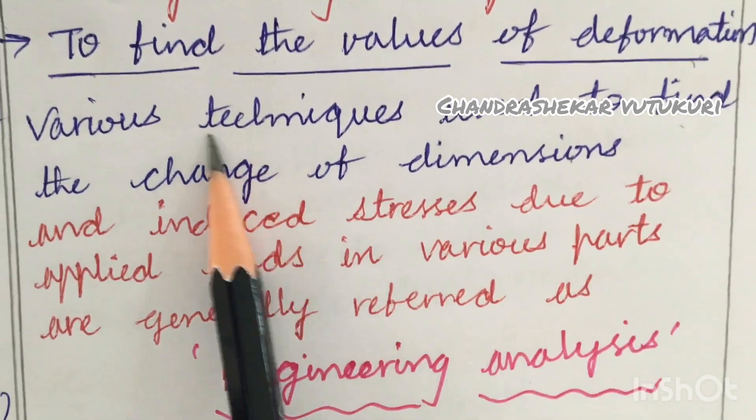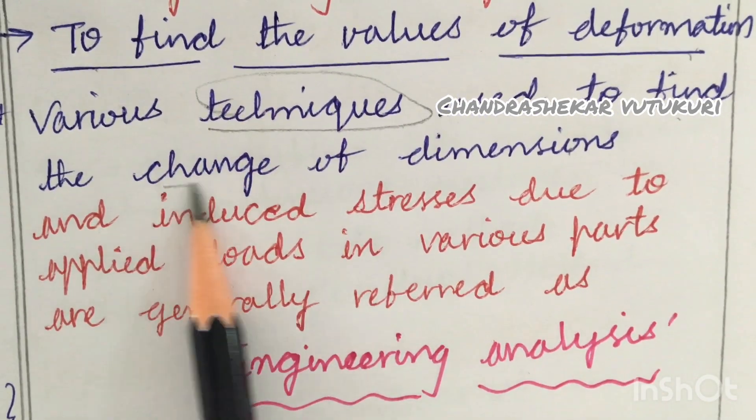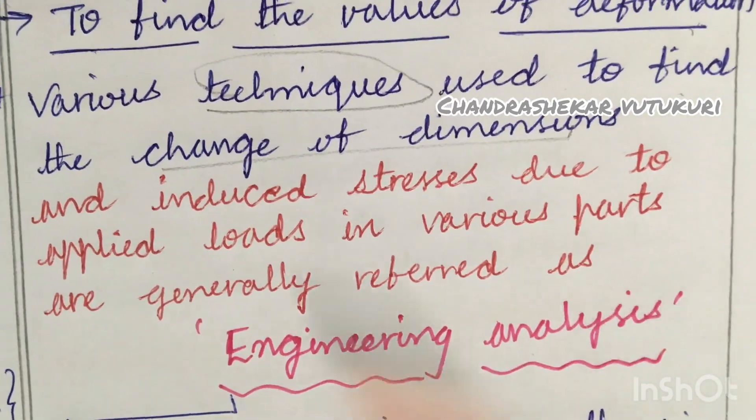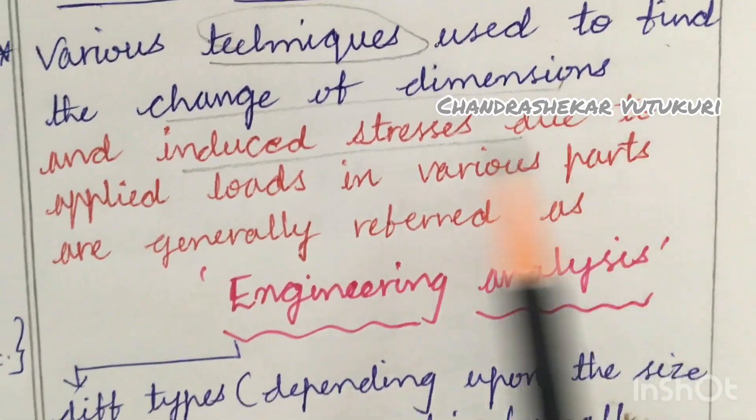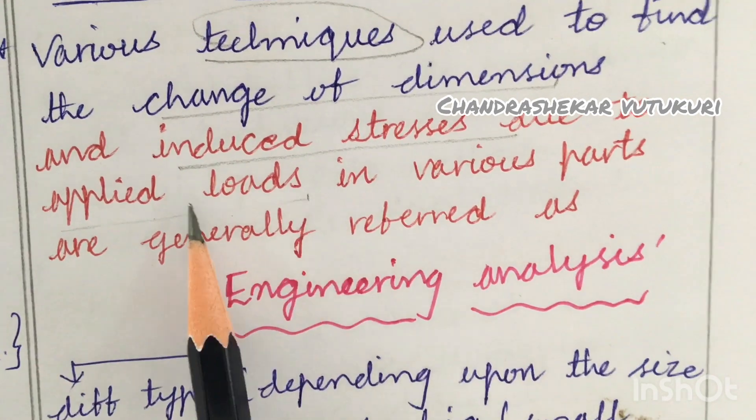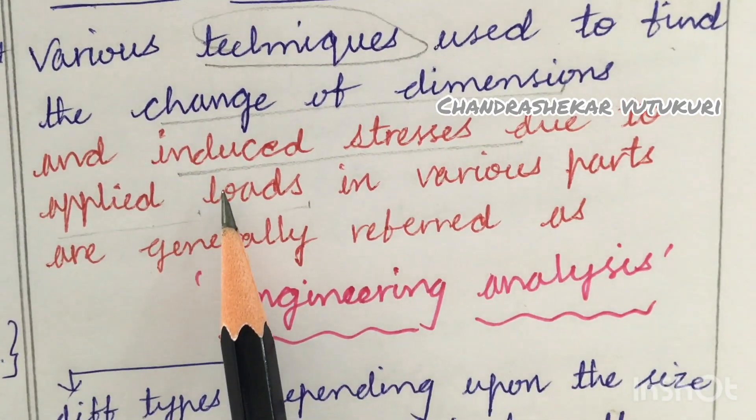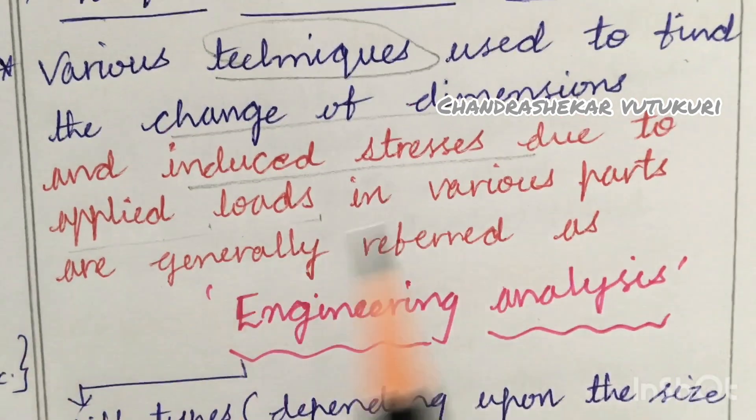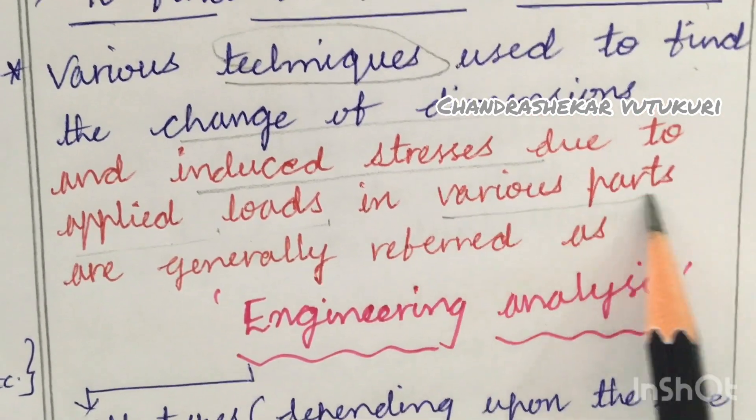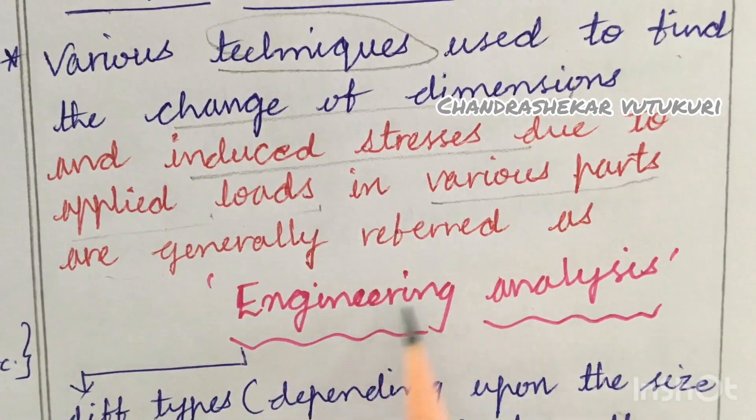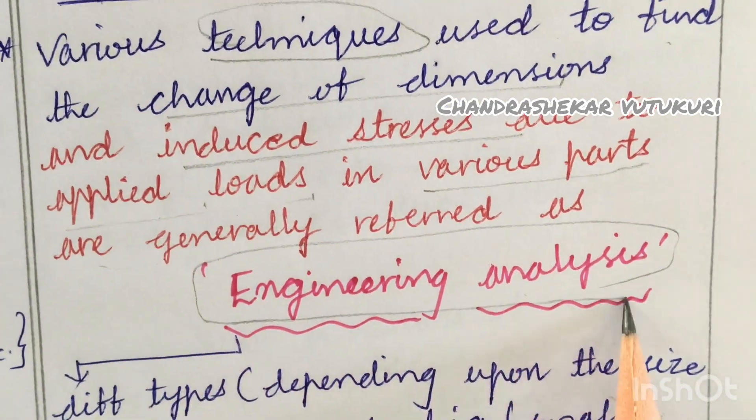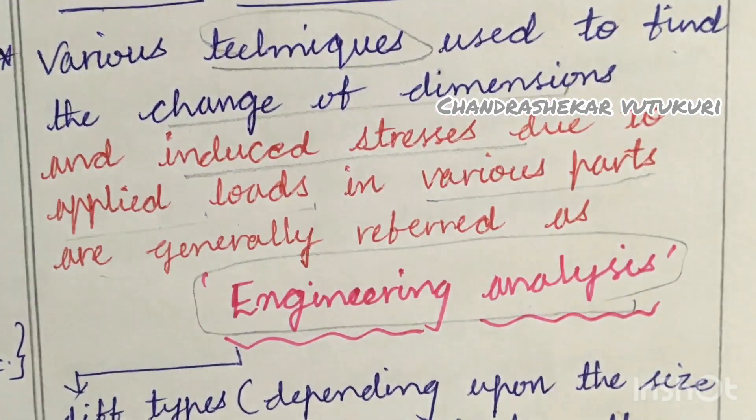That is the reason, to find the values of deformation which we cannot see with our naked eye into the machine. We use various techniques to find the change of dimensions. As an engineer, we use various techniques - where it is changing, where it is deforming, and induced stresses due to applied loads. When load is applied, where are stresses induced in the material component, which part, which corner. These various techniques are generally referred as engineering analysis.